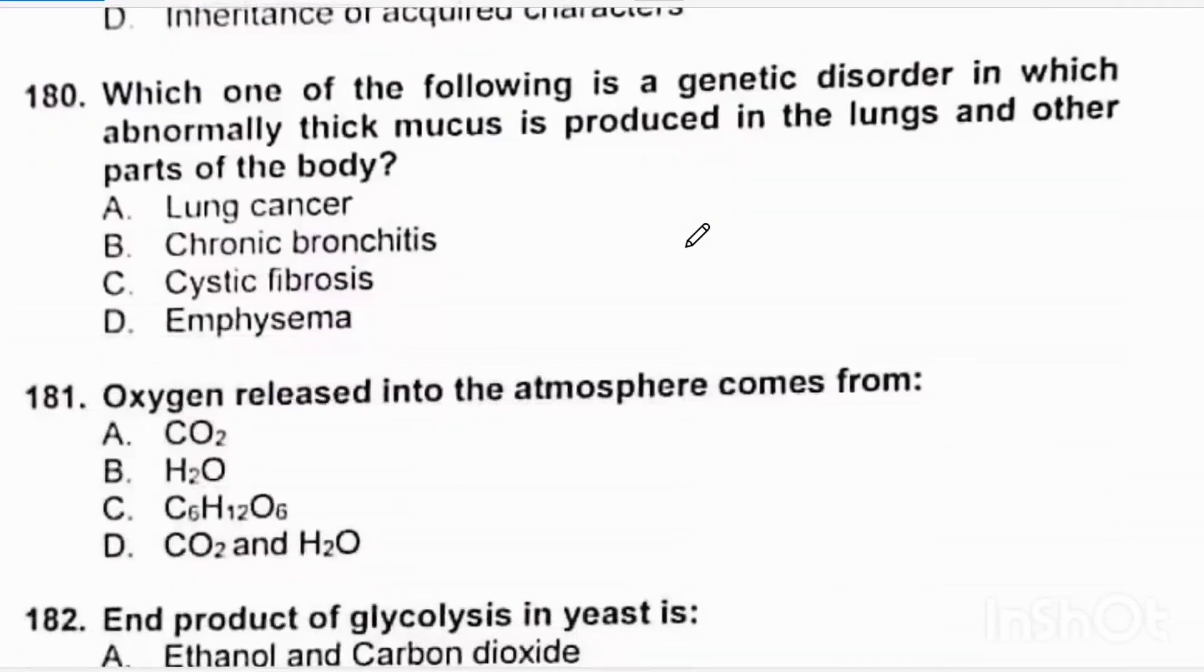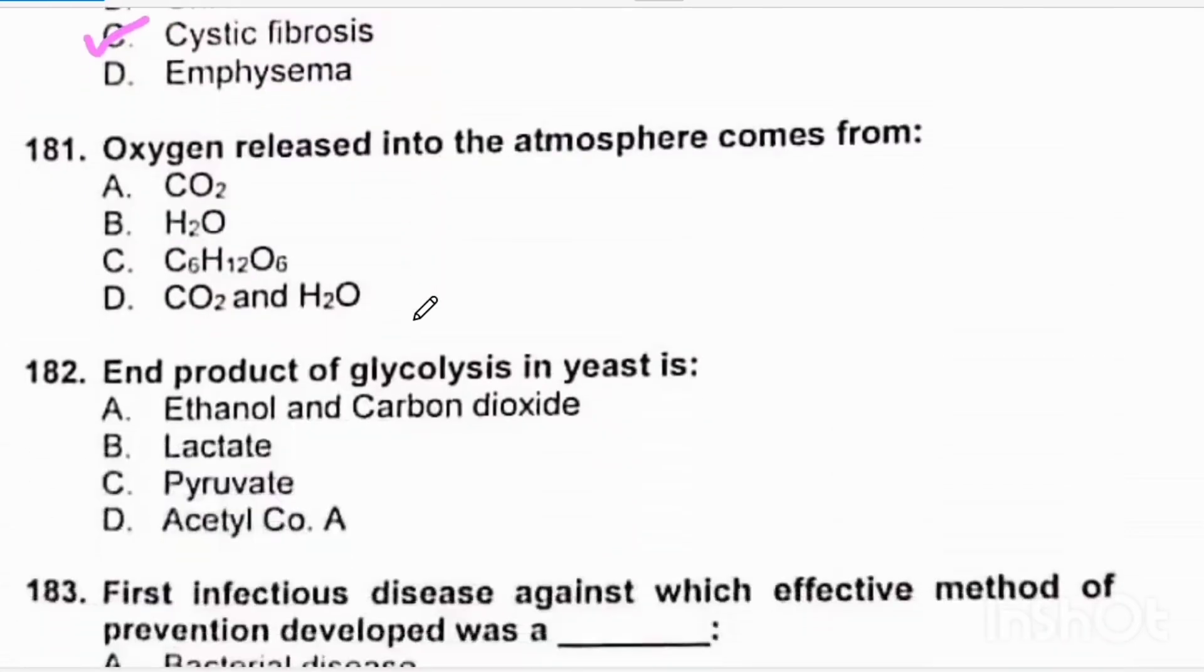Which one of the following is a genetic disorder in which abnormally thick mucus is produced? That is cystic fibrosis. Oxygen released into the atmosphere comes from water.